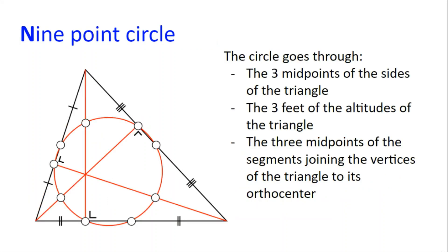Next, we have N for the nine-point circle. Every triangle has a nine-point circle and this circle is interesting because it goes through the three midpoints of the sides of the triangle, the three feet of the altitudes of the triangle, and the three midpoints of the segments joining the vertices of the triangle to its orthocentre H.